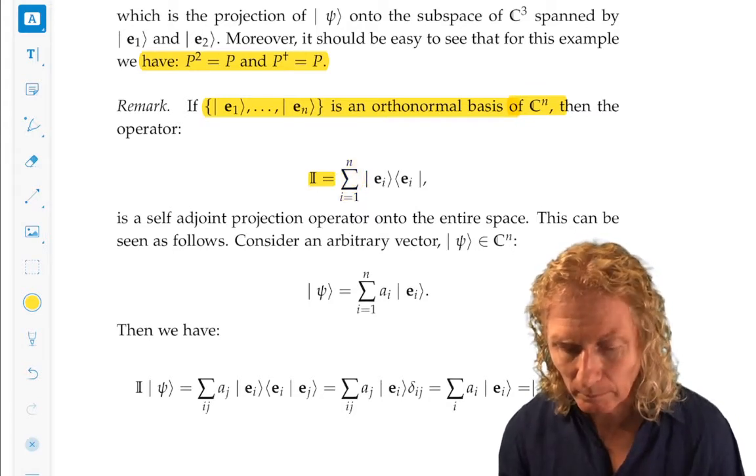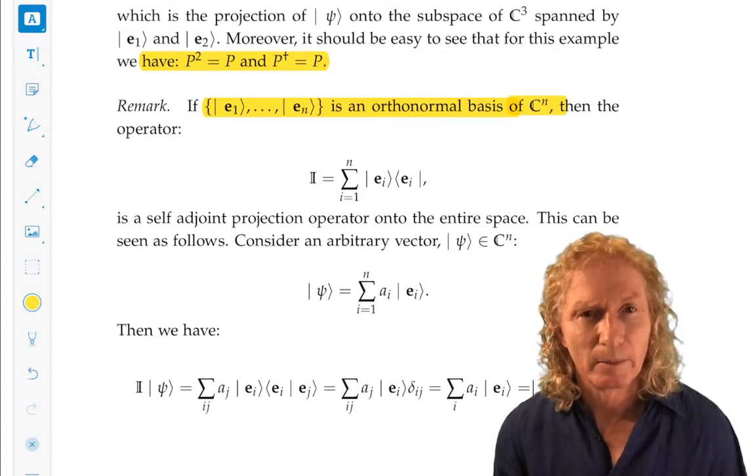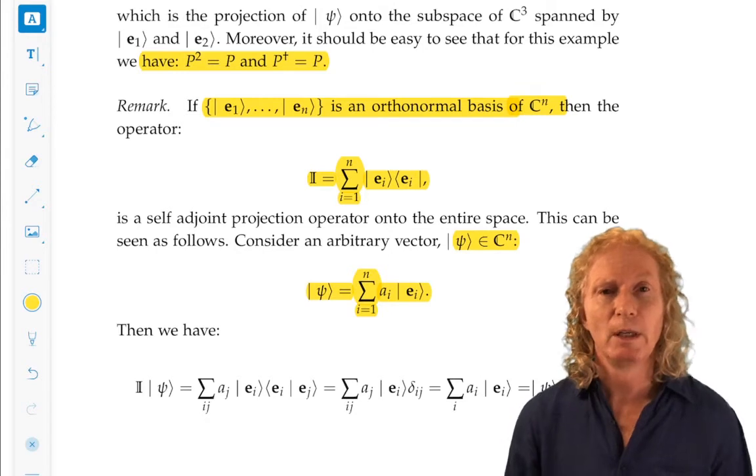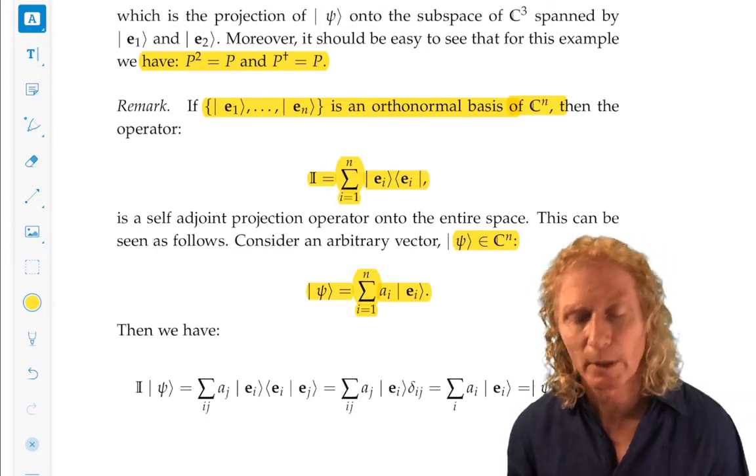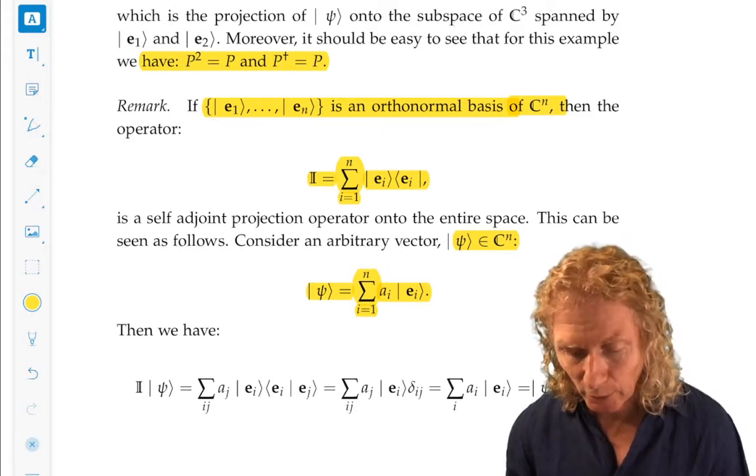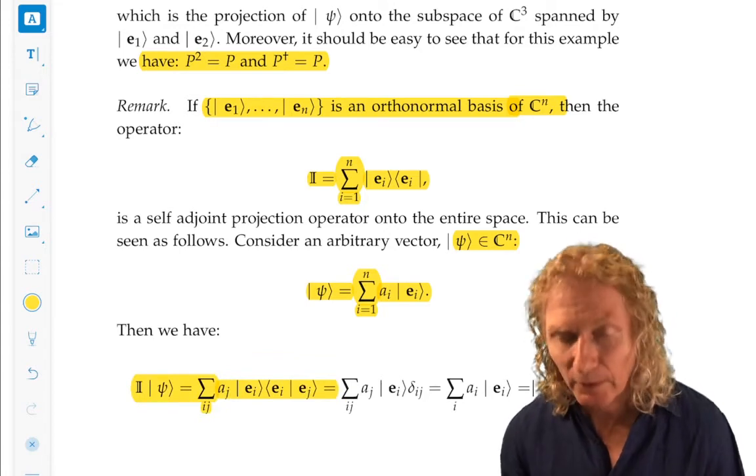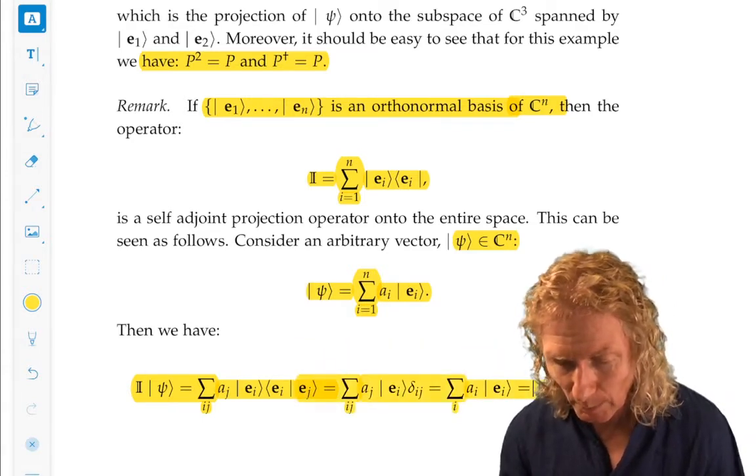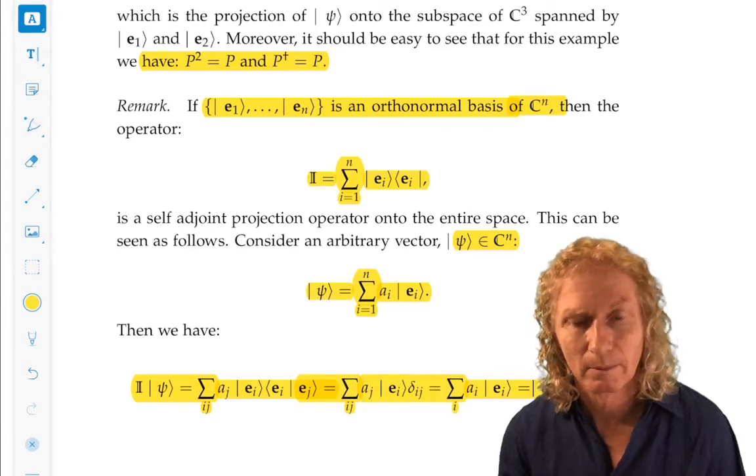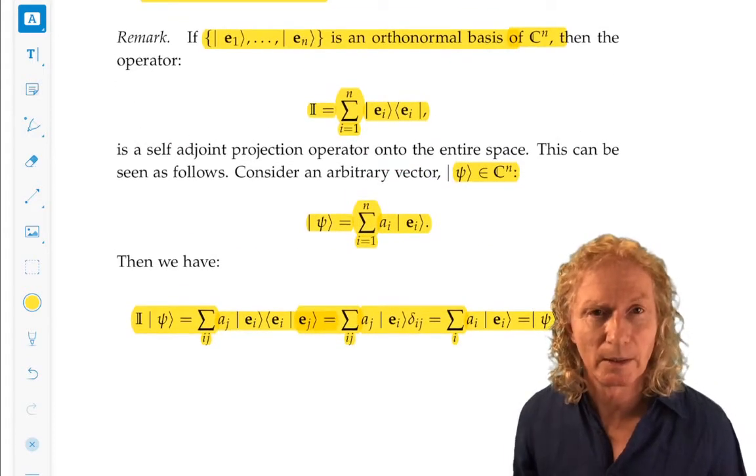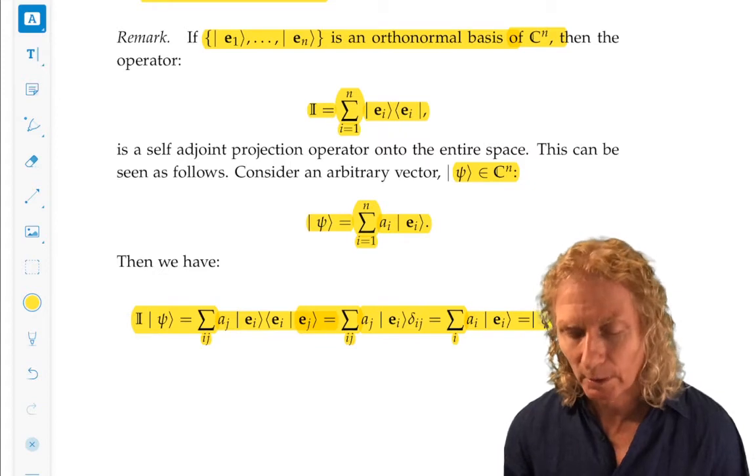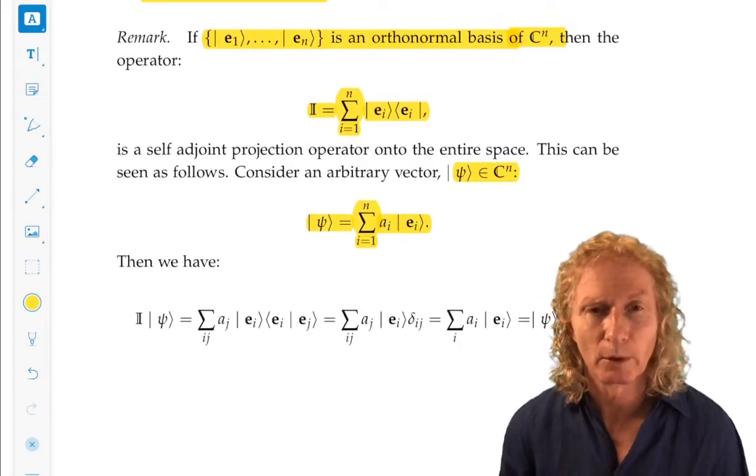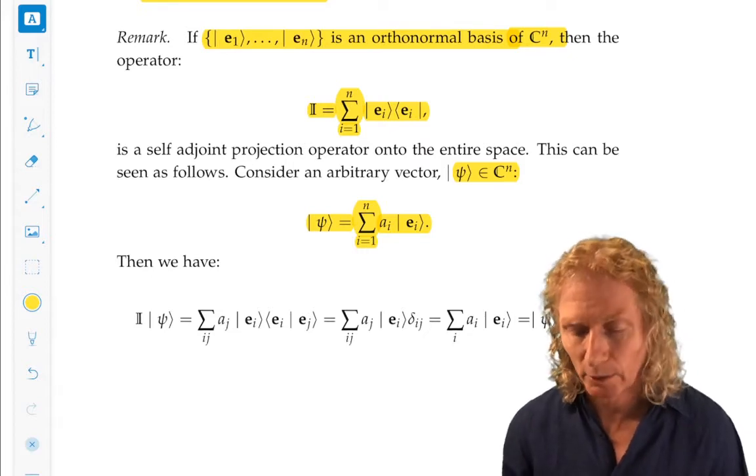So, how do I know it's the identity? Well, I take this and I let it act on an arbitrary vector in Cn. And that's the most general vector. You can see a linear combination of all possible basis elements. So, we do this calculation. And this is a very good calculation to do to get your indices straight, your Kronecker deltas. But doing this calculation, you end up just with ket psi. So, it is the identity map. Again, I went through this really quickly. Look at the calculations involved in this. And if there's any questions, ask me about them. Because this is an important concept here, the identity map in bracket notation.